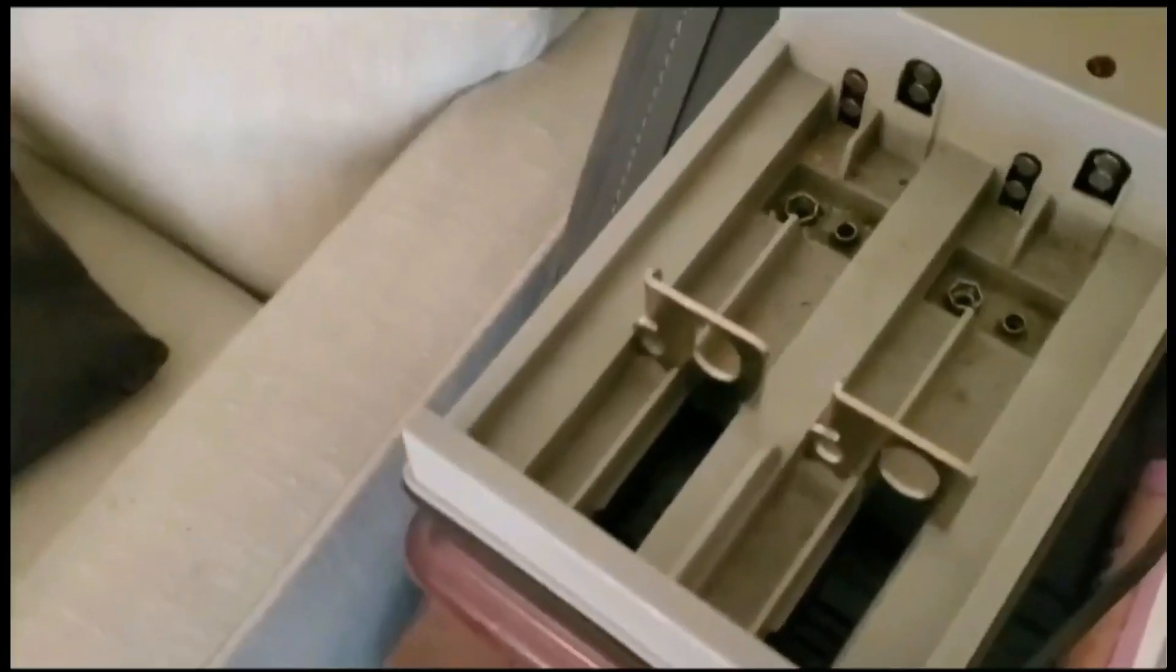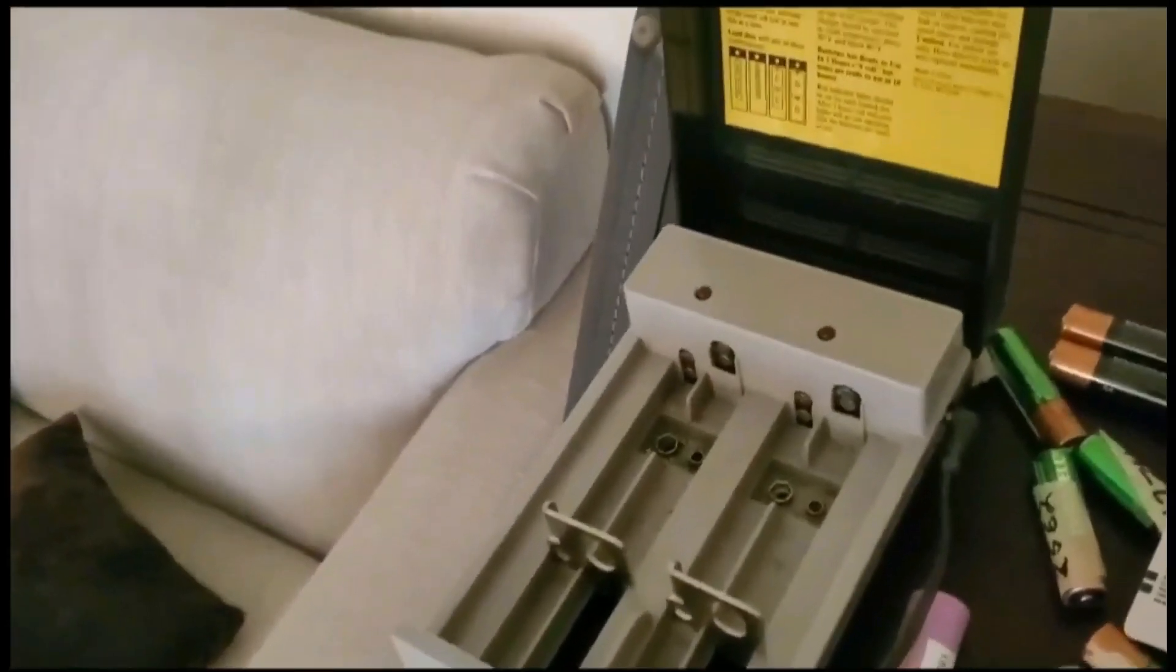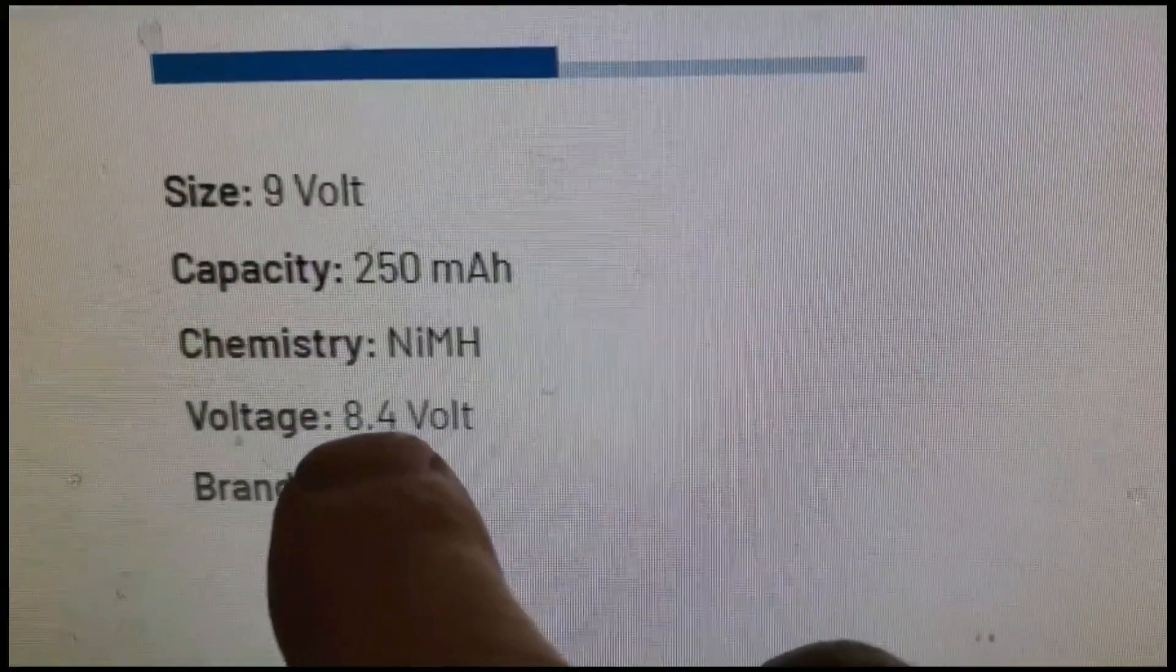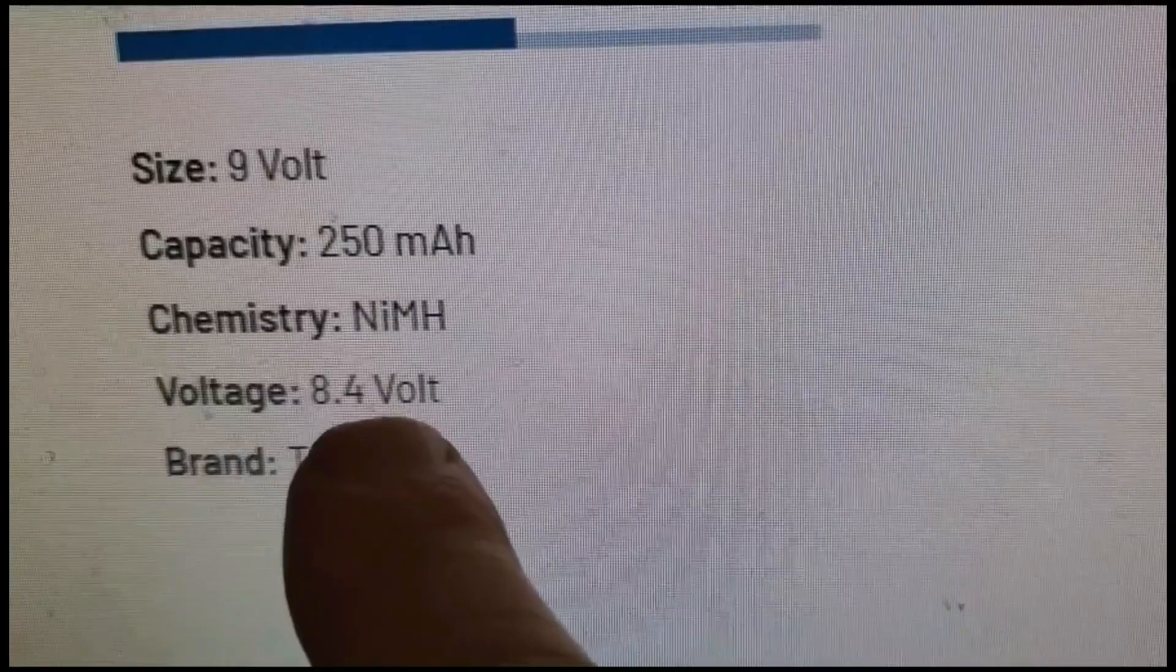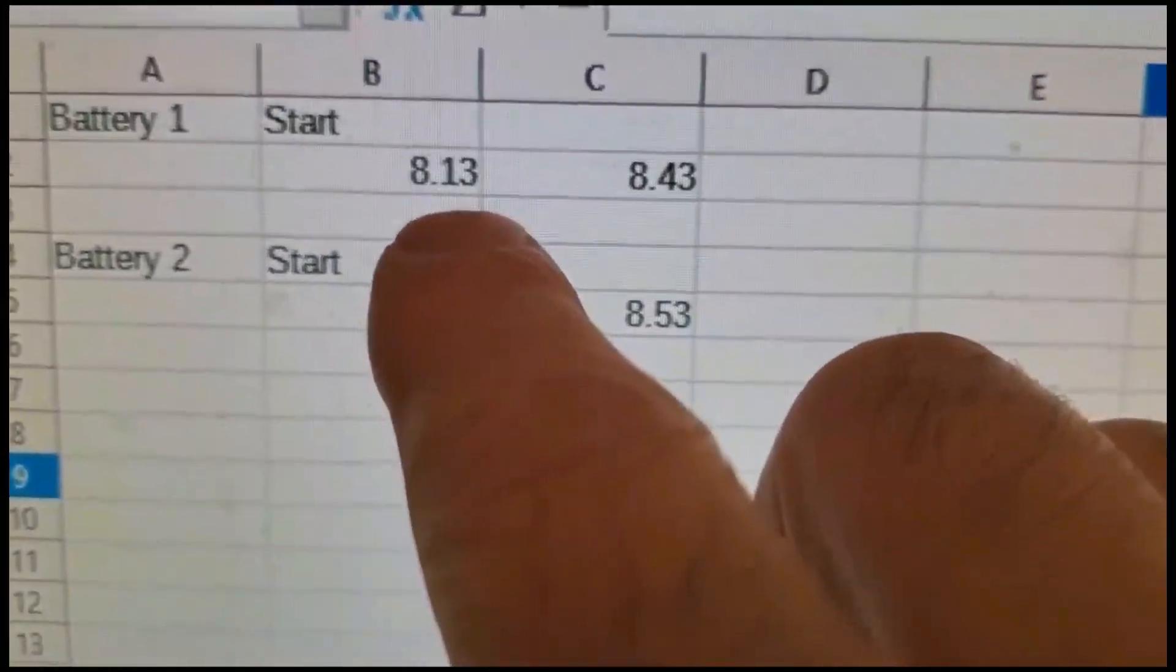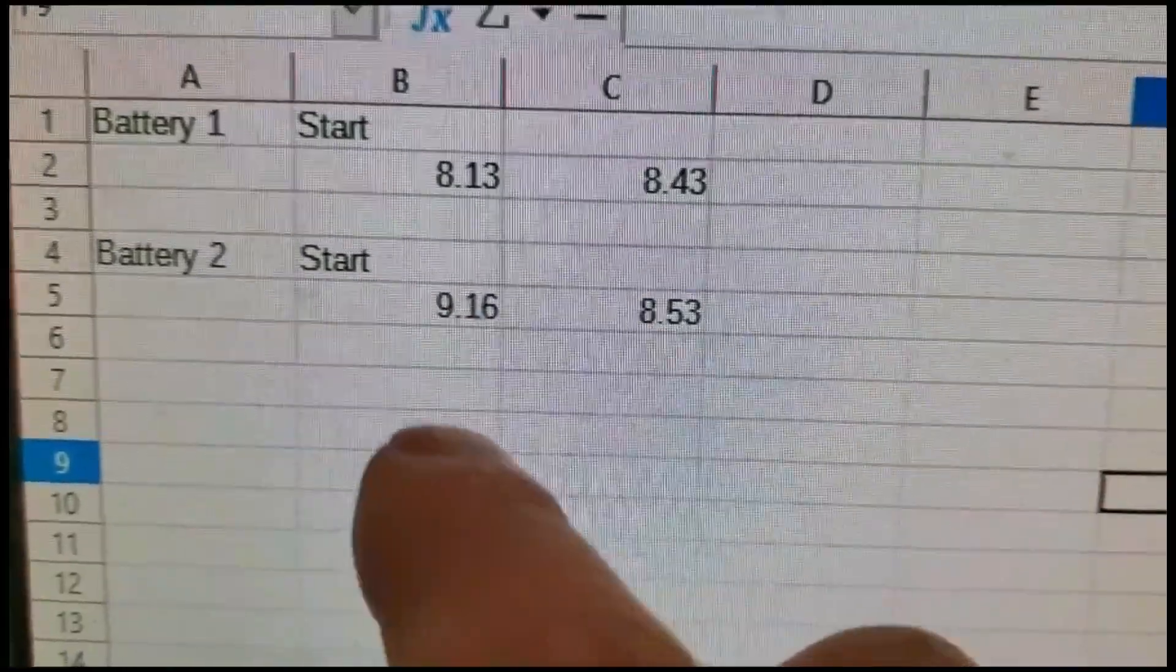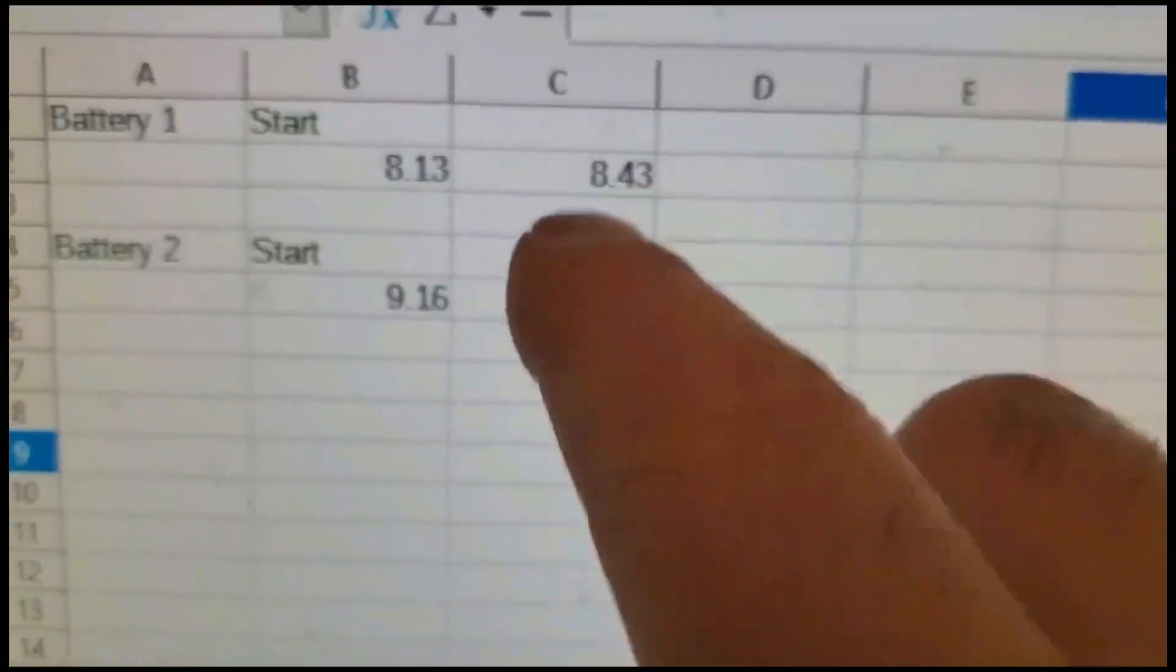I charged this with this nine volt battery charger and it shoved it up to 9.13 volts. So I decided to look up the specifications on these Tenergy nine volt batteries, and the fully charged voltage is 8.4 volts. Let's just go to the spreadsheet. This one only went from 8.13 to 8.43. This dropped from 9.16 to 8.53.